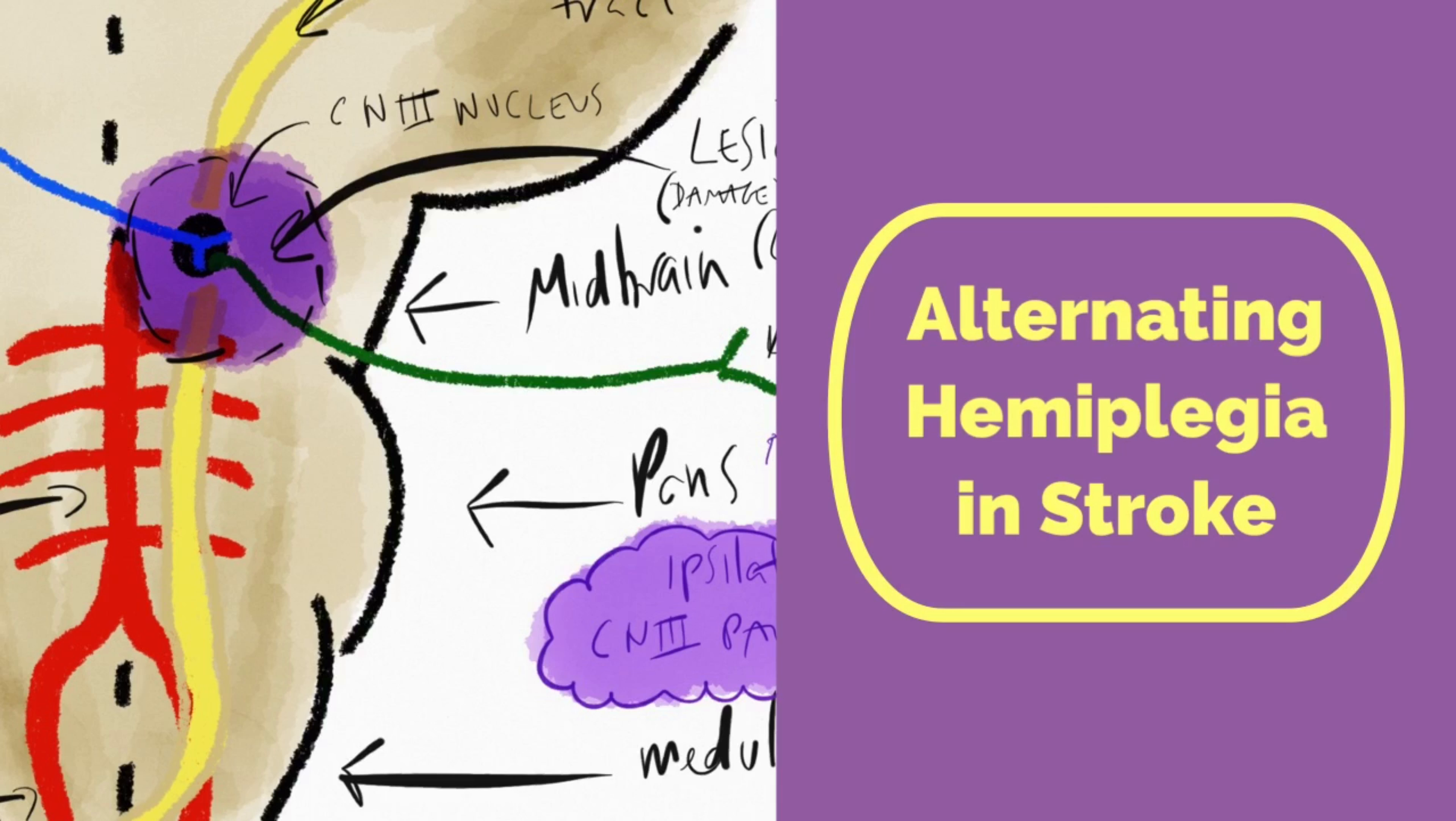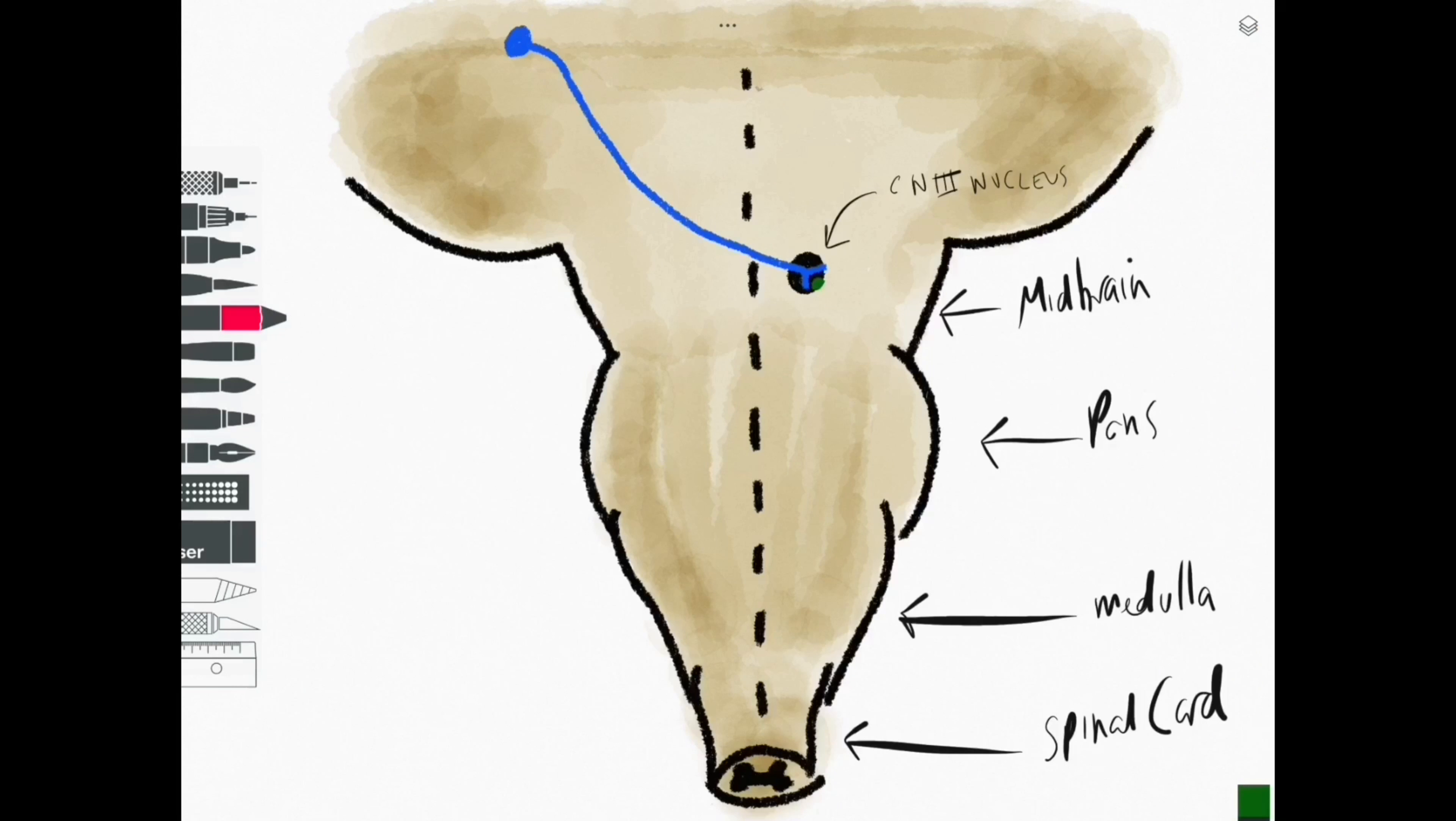We're going to use the oculomotor nerve as an example, drawing on its nucleus here unilaterally, and we can connect up the parts of the corticobulbar tract for its motor outflow. The blue neuron here is the upper motor neuron that crosses over and synapses with the contralateral cranial nerve 3 nucleus.